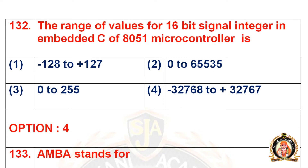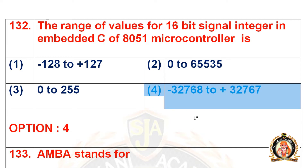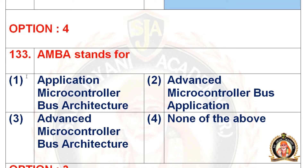Question 132: The range of values for a 16-bit signed integer in embedded C of 8051 microcontroller is. Options are -128 to +127, 0 to 65535, 0 to 255, and -32768 to +32767. The right option is the fourth option, that is -32768 to +32767.